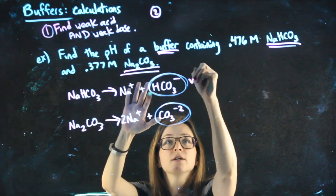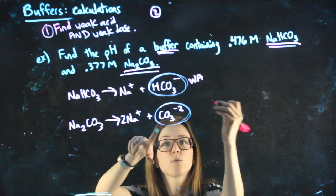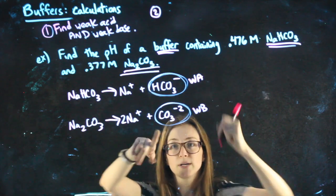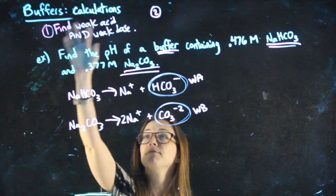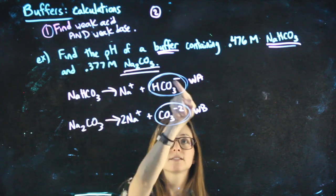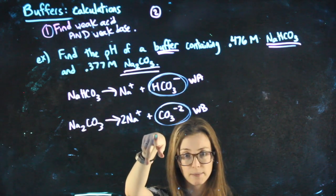The one with the extra H is going to be my weak acid. The one missing the H is going to be my weak base. So first step, find your weak acid and your weak base. That's my weak acid, that's my weak base.